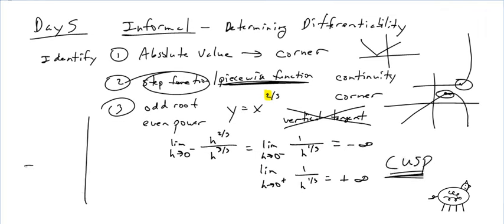If you graph y = x^(2/3), it's always going to be positive, so it looks like a cusp shape — because the exponent is less than one, it curves down toward the left and right rather than going straight. If you don't know what something is informally, do it formally: take the limit and figure it out. That's very important.